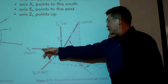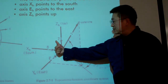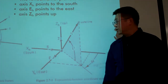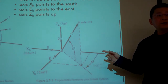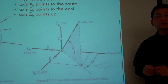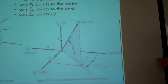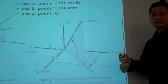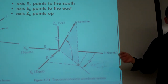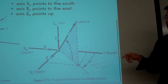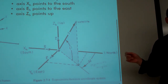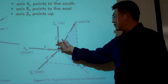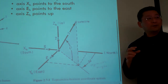In the S-E-Z coordinate system, we measure using two angles and one radius — three coordinates to describe positions. The first angle is the azimuth angle, abbreviated as AZ. That is the angle measured from the projected point of the object onto the S-E plane.